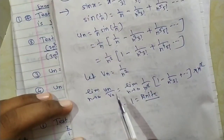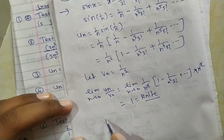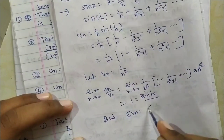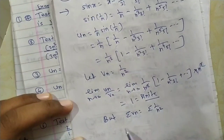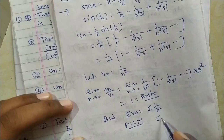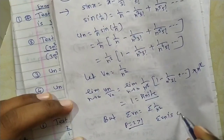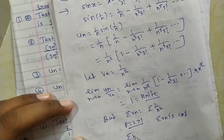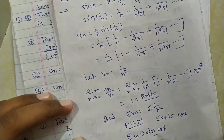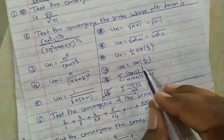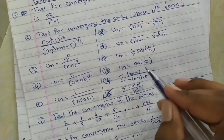Therefore series Σun and Σvn are convergent or divergent together. Series Σvn = Σ(1/n²) with p=2 > 1, so Σvn is convergent by p-series test. Hence by comparison test, series Σun is also convergent.